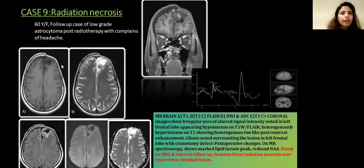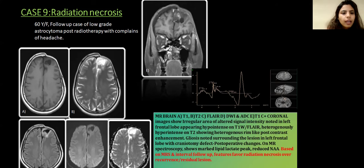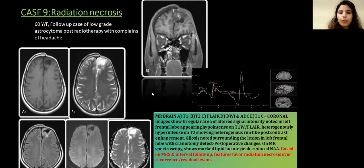Next case: 60-year-old female, follow-up case of low-grade astrocytoma post-radiotherapy, with complaints of headache. MR brain T1, T2, FLAIR, diffusion-weighted, and post-contrast coronal images showing an irregular area of altered signal intensity in the left frontal lobe, appearing hypointense on T1 and FLAIR, hyperintense on T2, with no diffusion restriction and mild contrast enhancement. There is gliosis in the left frontal lobe with a craniotomy defect suggestive of post-operative changes. MR spectroscopy shows lipid lactate peak and reduced NAA levels, with interval follow-up features favoring radiation necrosis over recurrence or residual lesion.